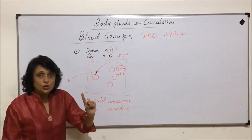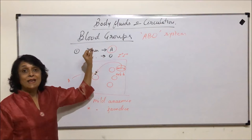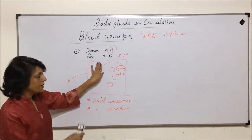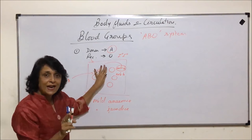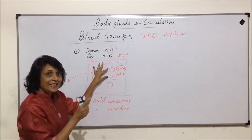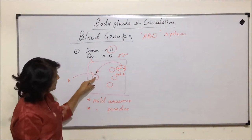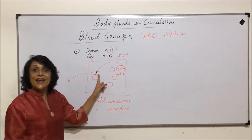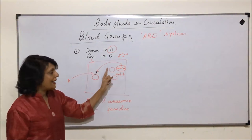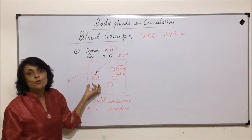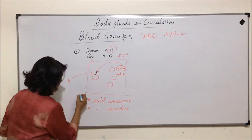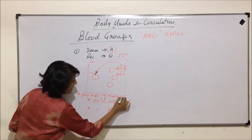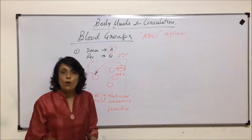To recap situation 1: the donor has blood group A and the recipient has blood group O. The recipient's RBCs have no antigen, but the plasma has anti-A and anti-B antibodies. As soon as the donor's blood enters, it brings antigen A, causing a reaction between antibody A and antigen A. A few RBCs get destroyed due to this antigen-antibody reaction.